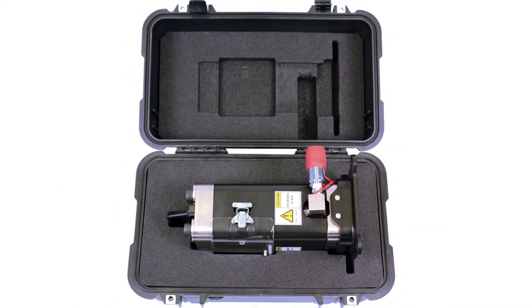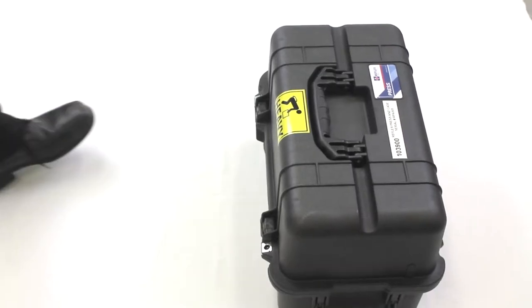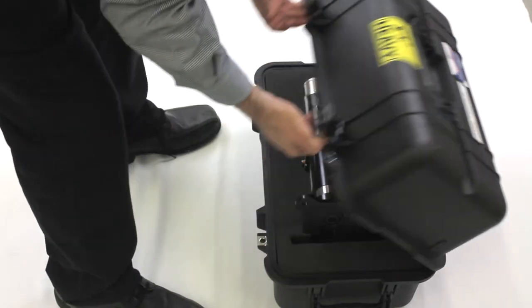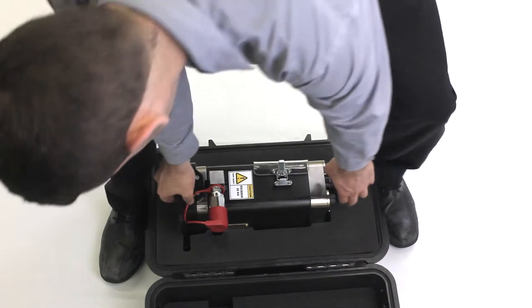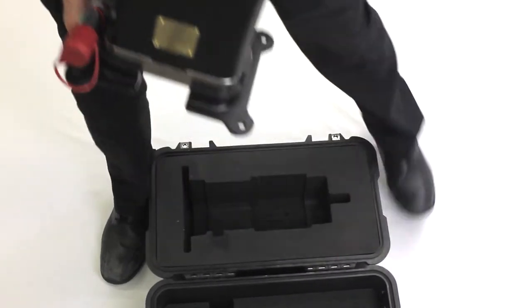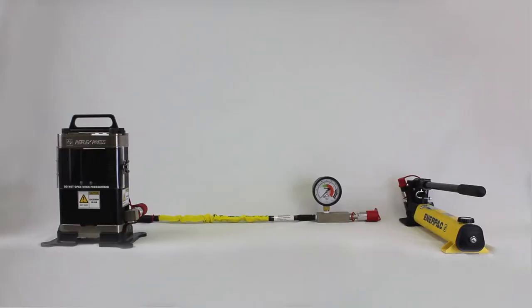The second case contains the Reflex Press. To remove the press from the case, the case can either be placed on the table or on the floor. Use care when lifting the unit from the case as the press unit weighs approximately 25 kilograms. When removing the press from the case, lift the unit from the handle and the base. Do not lift the unit using the hydraulic fittings as damage could occur.